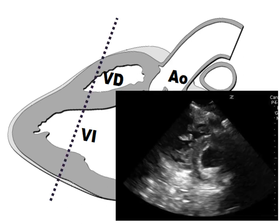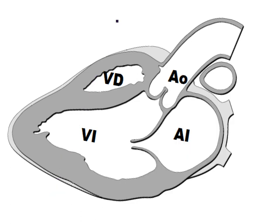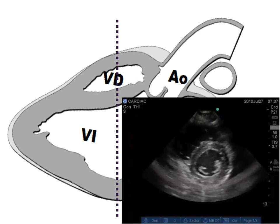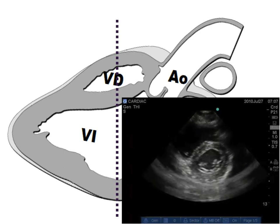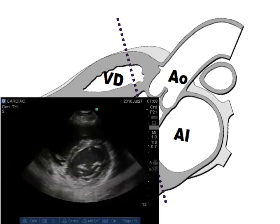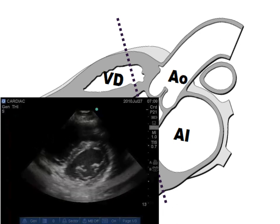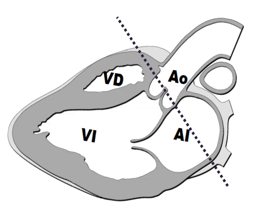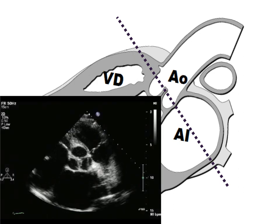From the parasternal short axis, if we move towards the apex, we will see the left ventricle cut across like a small donut or circle squeezing. Moving higher towards the base, we can evaluate the left ventricle, which is larger, and see two structures in the wall — the papillary muscles or the chordal cords. Moving further towards the mitral valve, we see it cut across like a fish mouth, opening and closing in systole and diastole. The last level cuts across the aortic outflow and aortic valve, where we can also see the tricuspid valve.